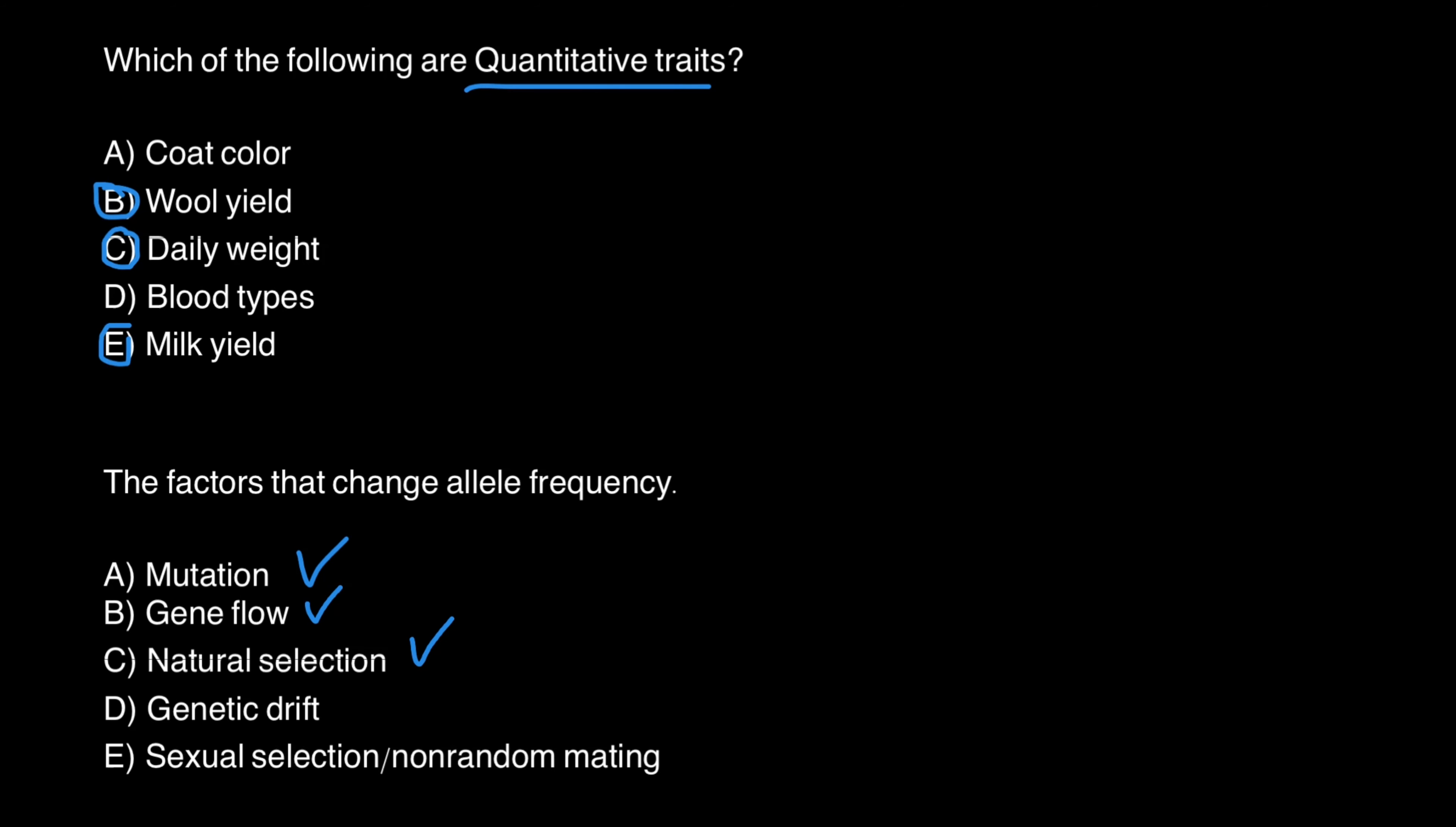Genetic drift is another example that usually caused by natural selection, and also would cause change in allelic frequency. And answer E, sexual selection, non-random mating. Non-random mating always leads to also change in allelic frequency. So all the variants are going to be correct variants.